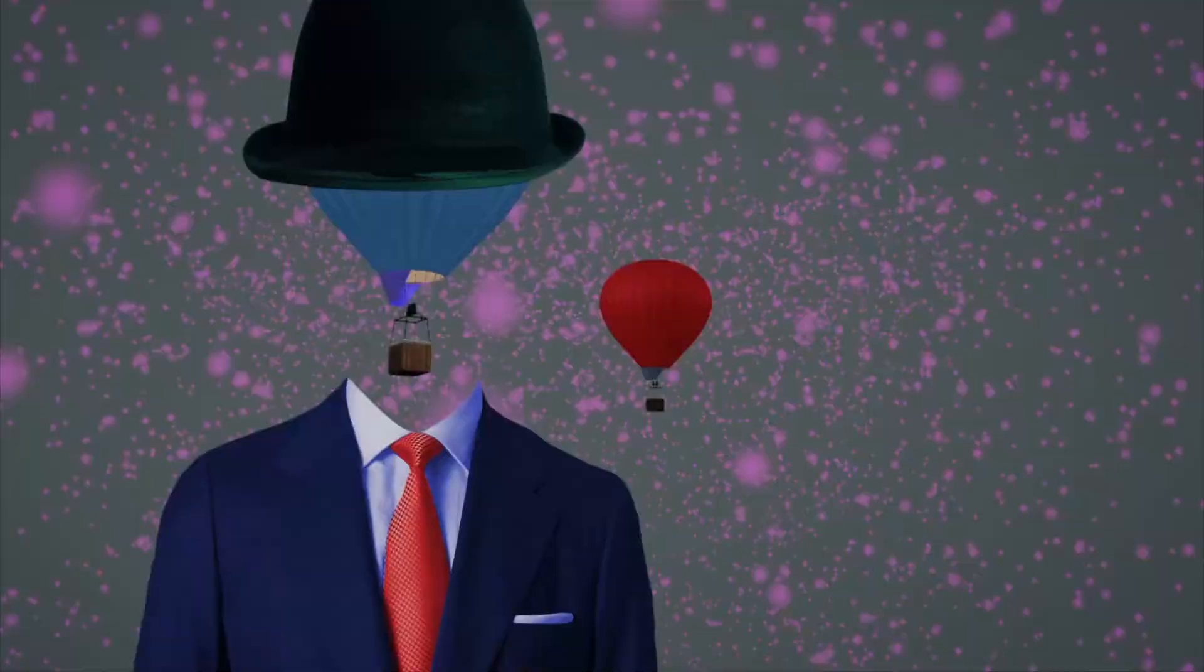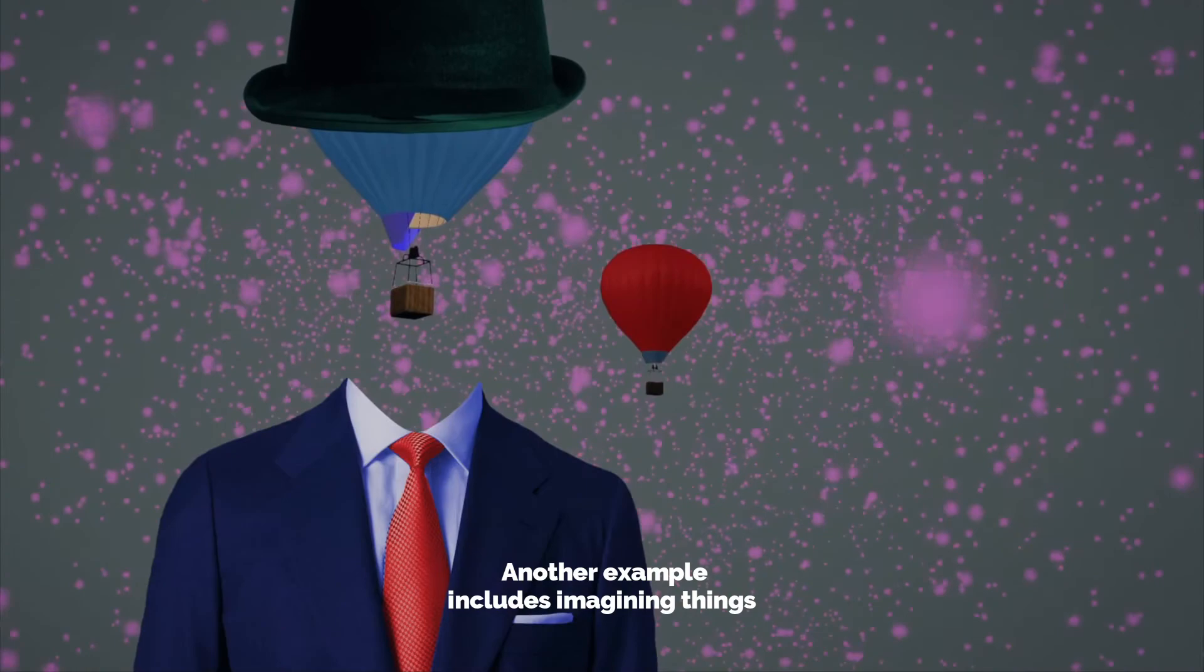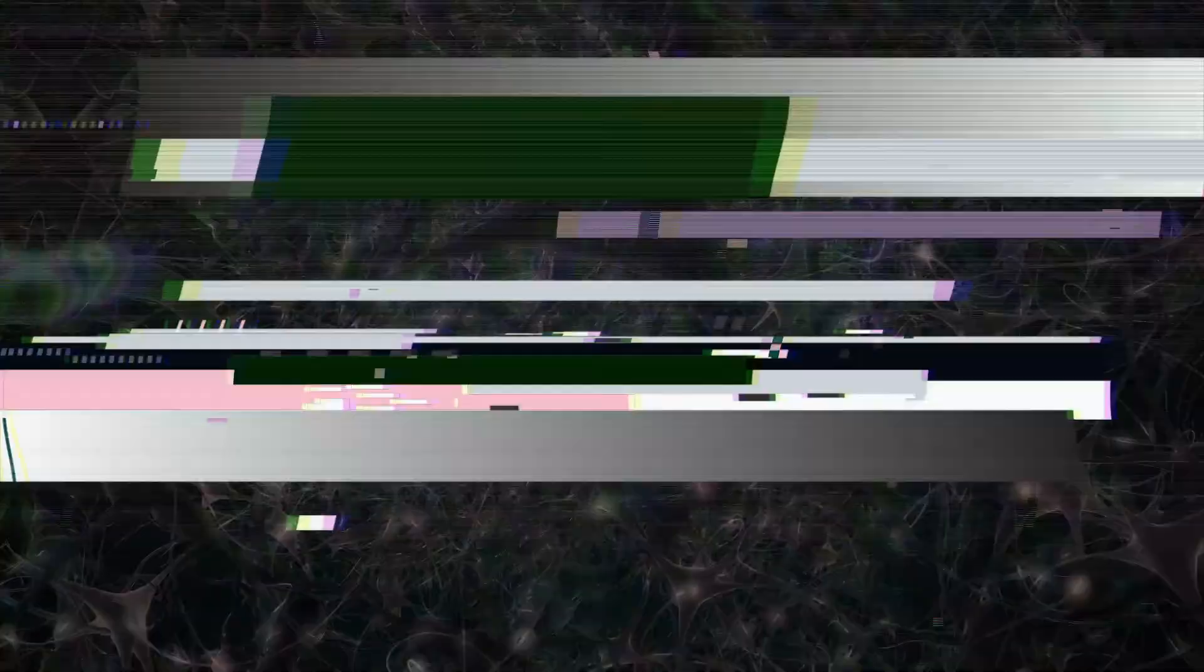Another example includes imagining things where certain areas of the brain like temporal and occipital lobes are activated and they respond in a certain way. The brain has 86 billion neurons that need energy, and the cells start firing electrical energy impulses whenever we think about something.